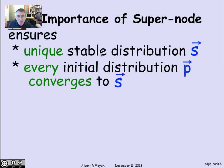The super node mechanism also ensures something even stronger, that every initial distribution p converges to the stationary distribution, to that unique stationary distribution.